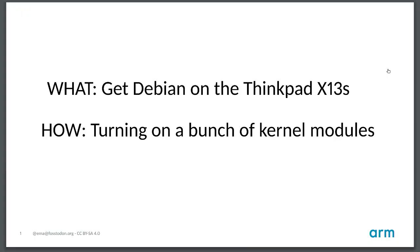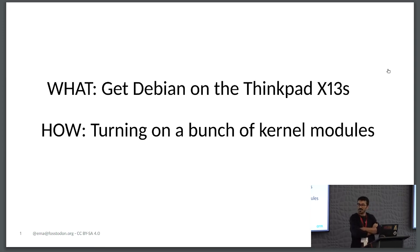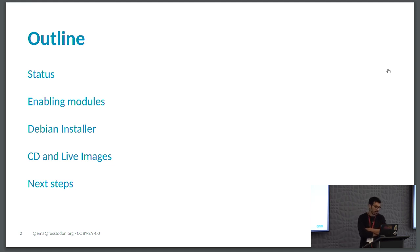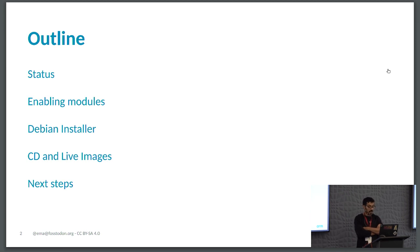So let's start. The talk is essentially about getting Debian to work fine on these beautiful ARM machines. How to do that? It's basically switching on kernel modules in the kernel configuration. We're going to see what the current status is, how you enable kernel modules in Debian, and how to get from a kernel package with all the right modules to something that allows you to install the OS on the laptop—for example, the Debian installer.